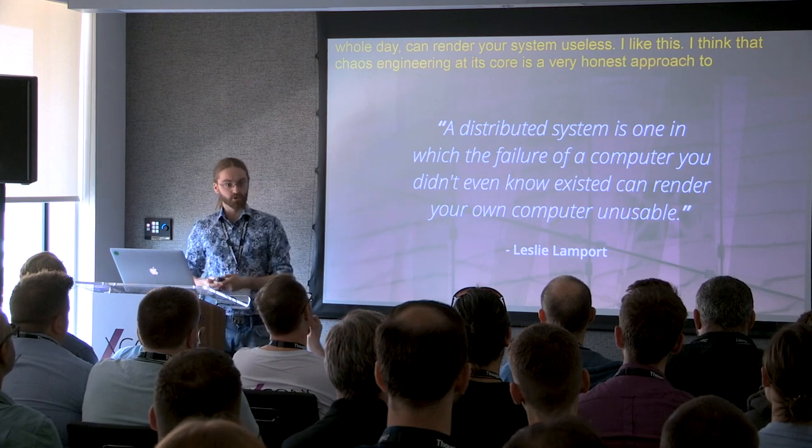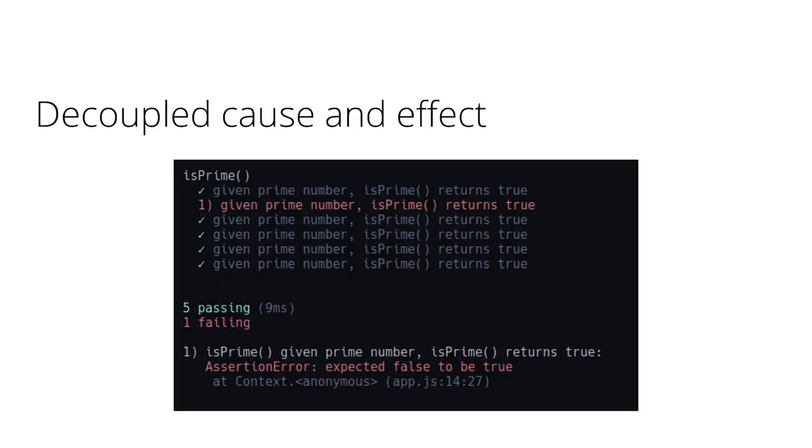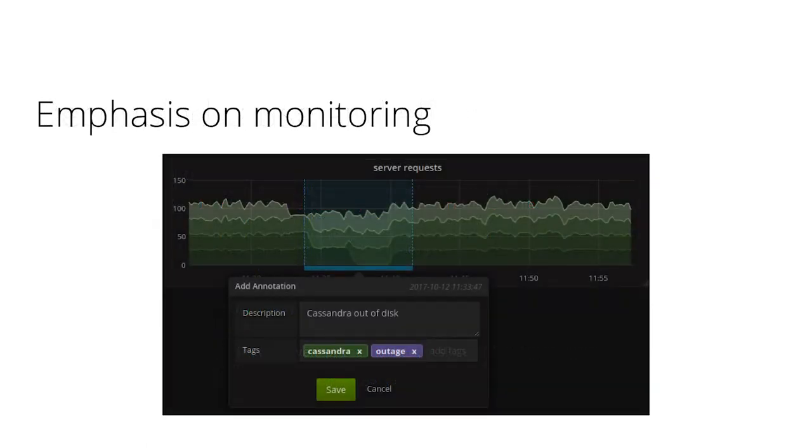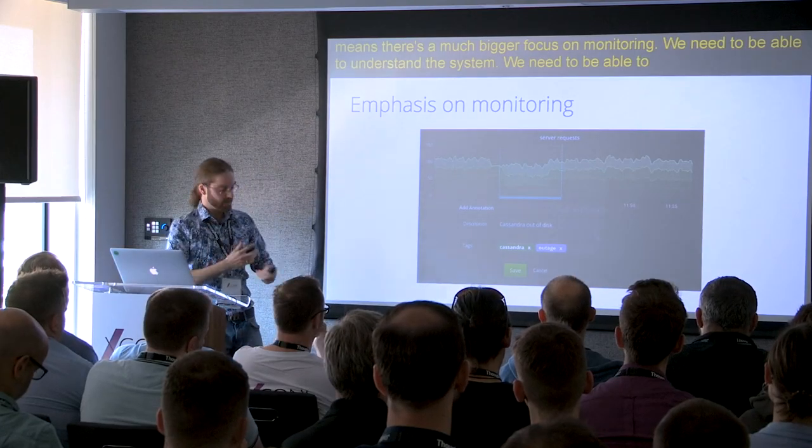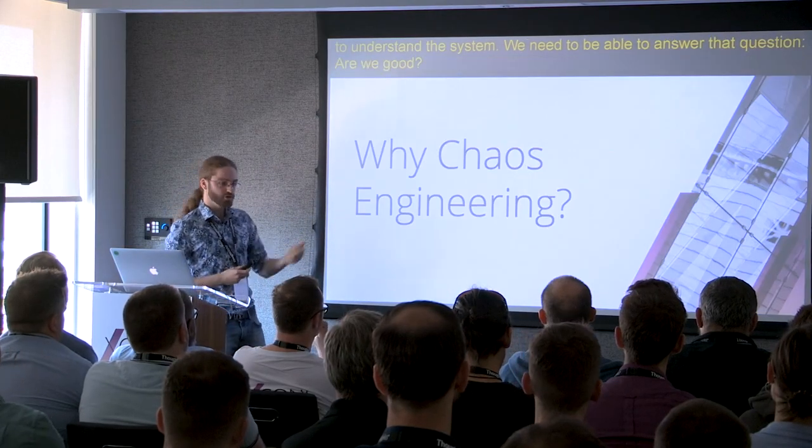We also see a big decoupling of cause and effect here. Most testing suites—traditional testing, unit testing, functional testing—you can see exactly the line that caused the failure. Here we see a failure in one data center might cause a failure on the other side of the world, which means there's a much bigger focus on monitoring. We need to be able to understand the system, to answer that question: are we good? So I think chaos engineering is cool, but should you be investing here?